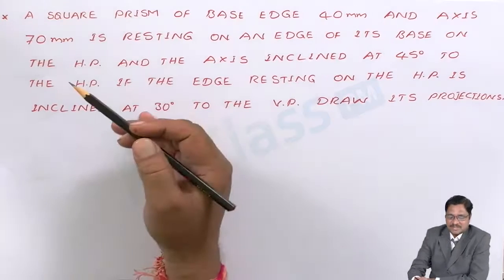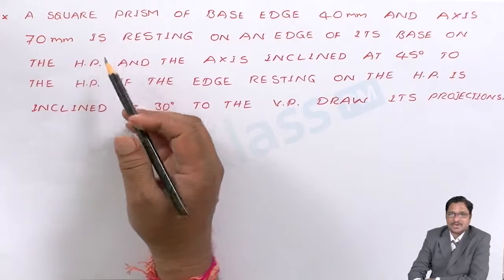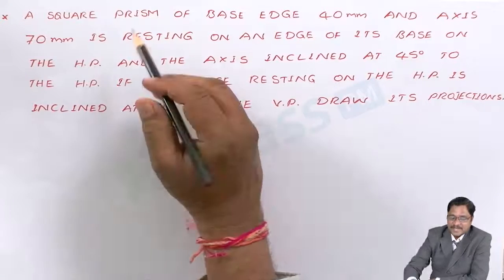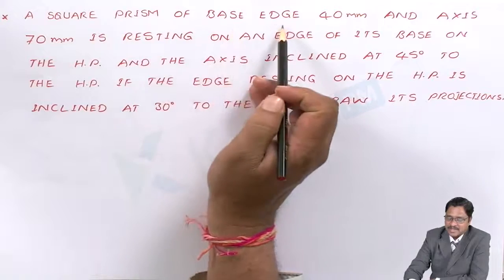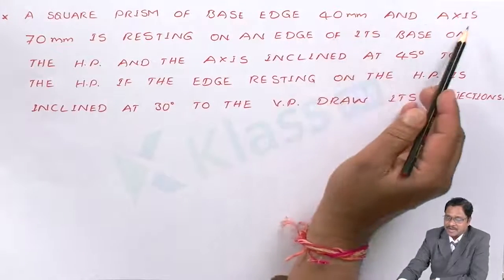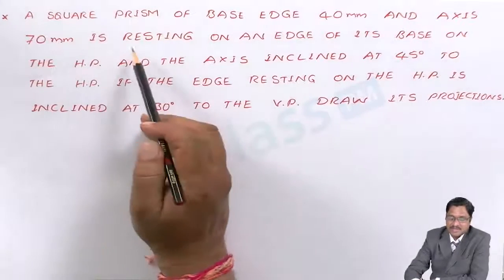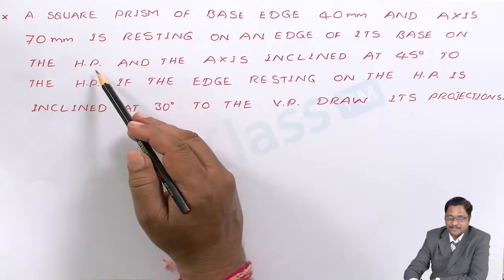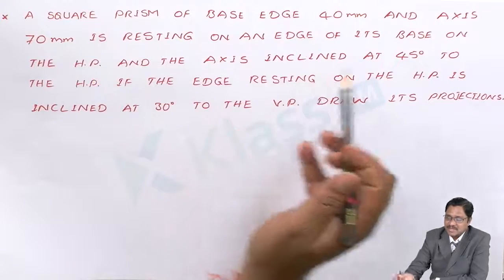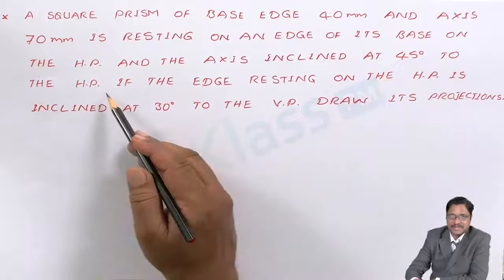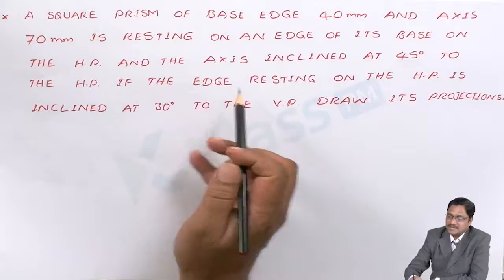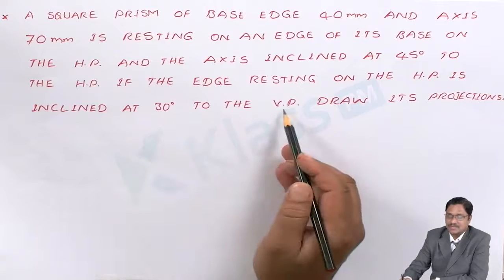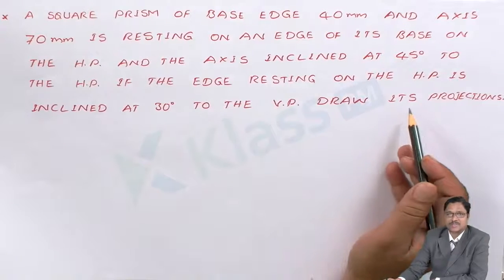I will read out the problem — try to understand what the object has been given and what conditions are to be fulfilled. A square prism of base edge 40 mm and axis 70 mm is resting on an edge of its base on the HP. The axis is inclined at 45 degrees to the HP, and the edge resting on the HP is inclined at 30 degrees to the vertical plane. Draw its projection.